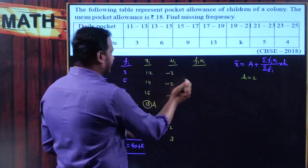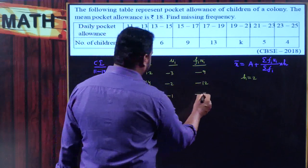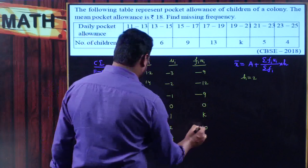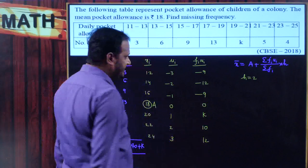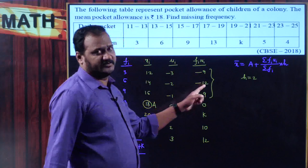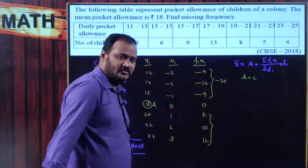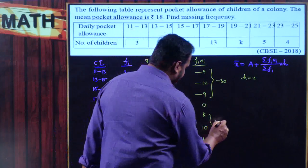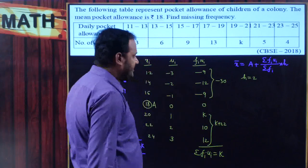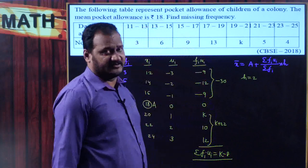Now computing fi·ui: 3×(−3)=−9, 6×(−2)=−12, 9×(−1)=−9, 13×0=0, k×1=k, 5×2=10, 4×3=12. Summing negatives: 9+12+9=30, so negative total is −30. Summing positives: 10+12=22, plus k. Therefore Σfi·ui = k + 22 − 30 = k − 8.